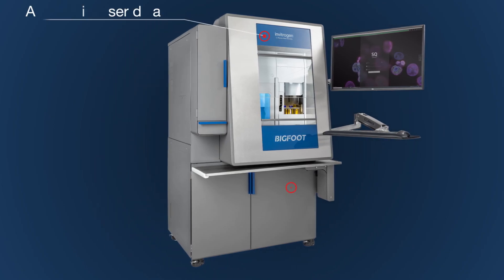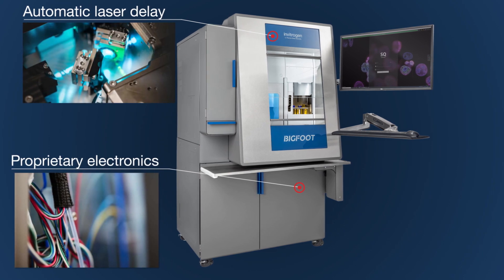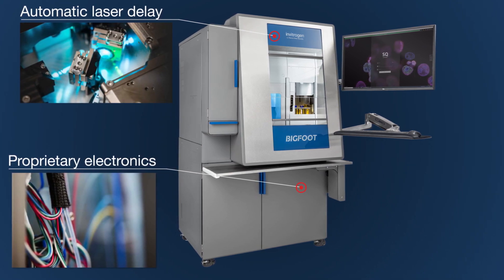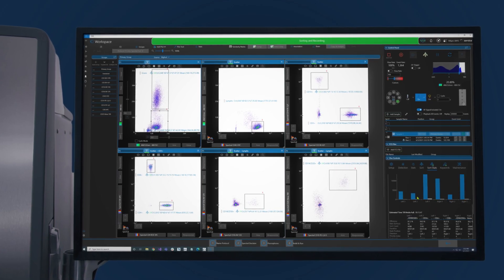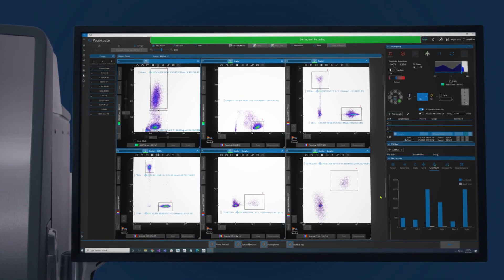The Invitrogen Bigfoot Spectral Cell Sorter with Sasquatch Software utilizes custom electronics specifically designed for cell sorting and is capable of sorting on spectrally unmixed data in real time.